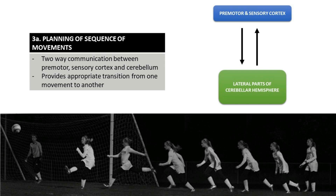Planning of sequence of movements: the lateral parts of the cerebellar hemisphere communicate with the premotor and sensory portions of the cerebral cortex in a two-way communication. The plan is transmitted from the cerebral cortex to the cerebellum, and two-way traffic between these areas provides appropriate transmission from one movement to the next. This plan is stored as memory in the cerebral cortex, and once the learning process is complete, these activities are executed easily and smoothly in sequence.